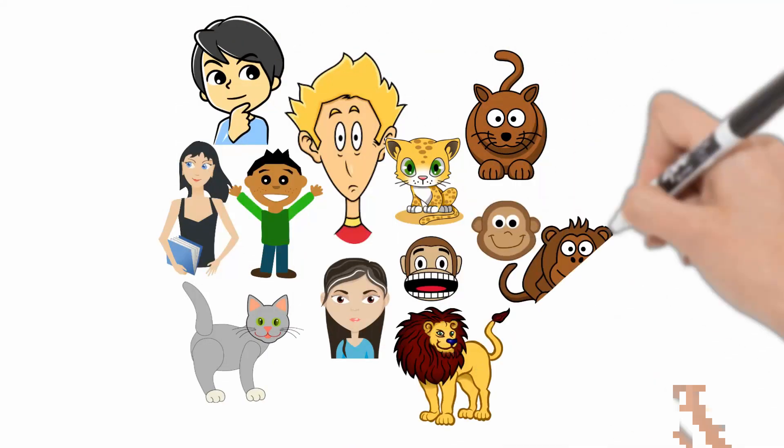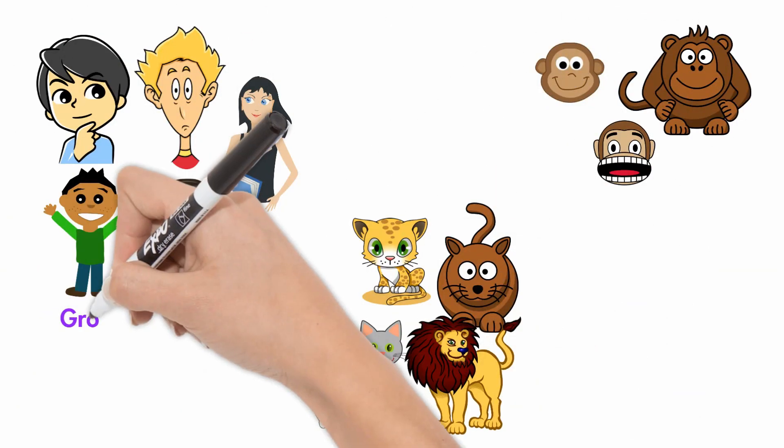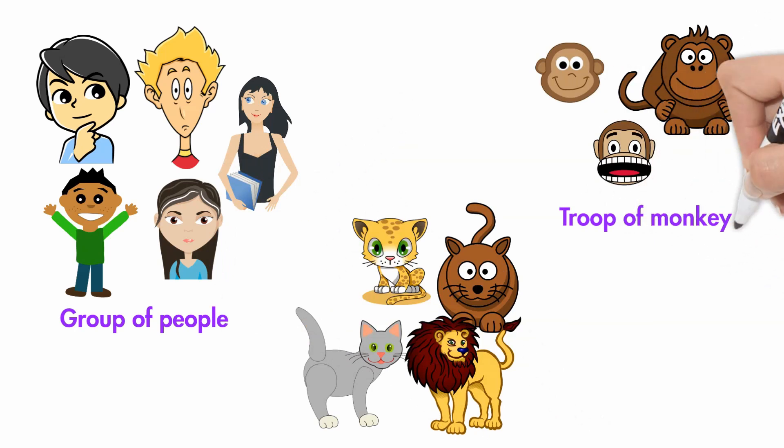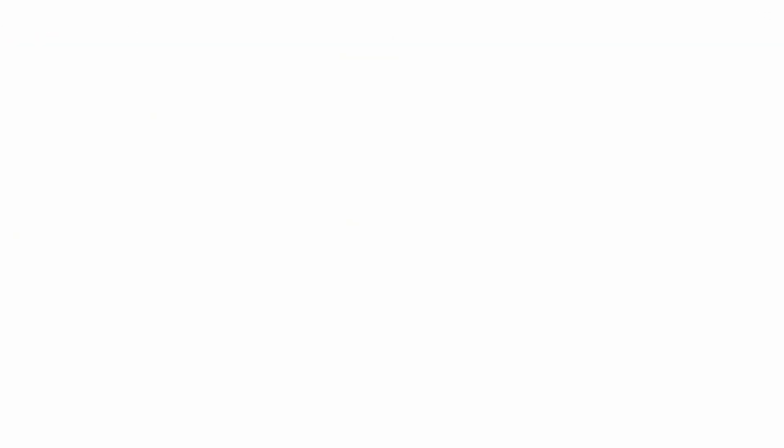Can you make any sense out of this picture? I'm sure it's not possible. Unless we were to club the pictures up like so, then you can see a group of people, a troop of monkeys, and a cloud of cats or the cat family.